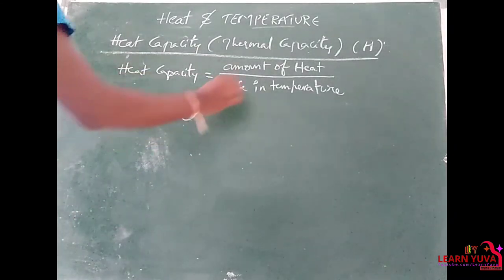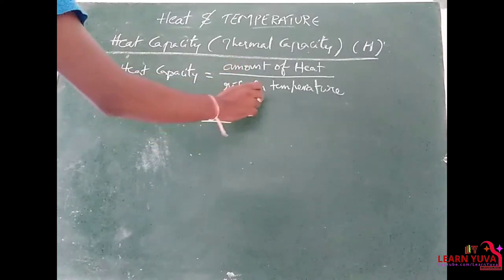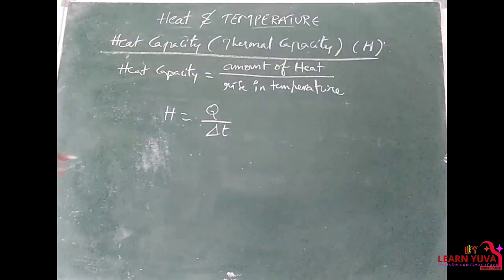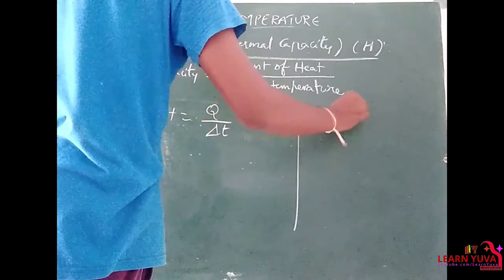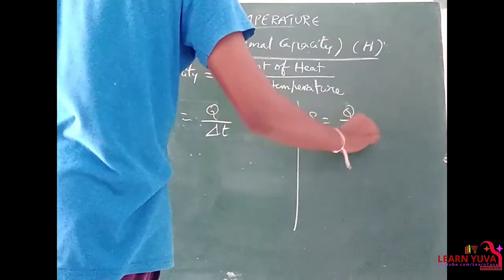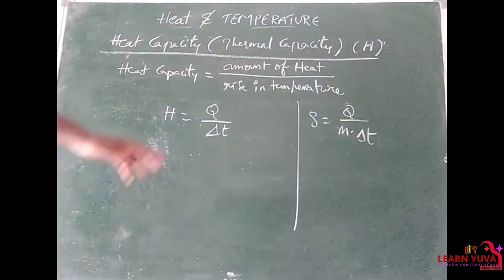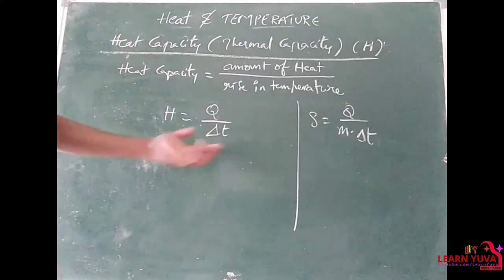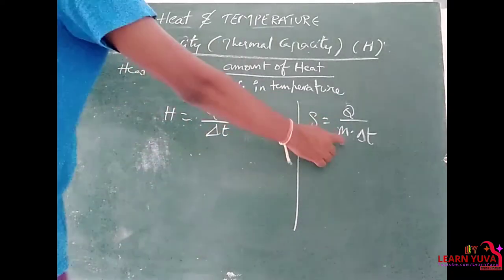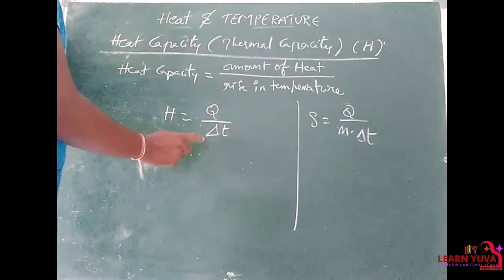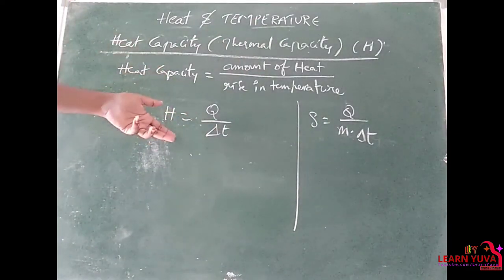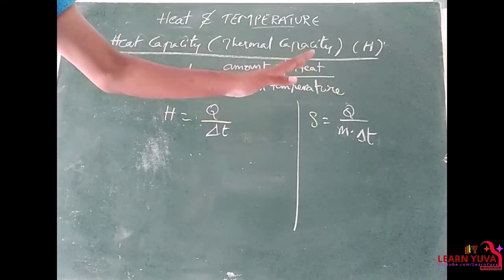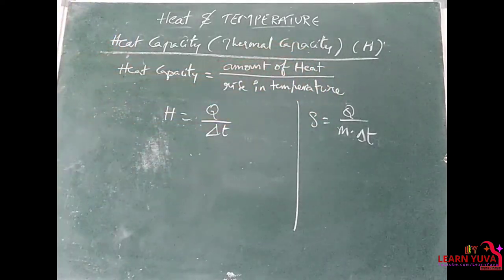From this, heat capacity H is equal to Q divided by delta T. Comparing with specific heat S = Q divided by m into delta T: in heat capacity there is no mass term, whereas in specific heat capacity there is a mass term. For heat capacity, the whole body's temperature changes; for specific heat capacity, only the unit mass temperature changes.